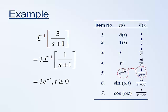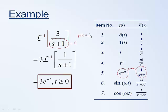We always make the assumption that our time functions start at t equals 0, so we add that qualifier. If we look at this solution, it turns out this is what we should have anticipated. If we look at the poles of the Laplace function — where the poles are the values that make the denominator equal to 0 — we can see there is a single pole equal to minus 1.